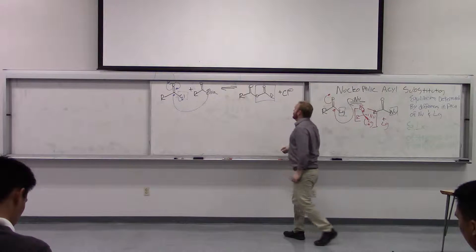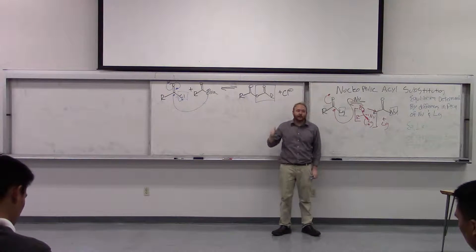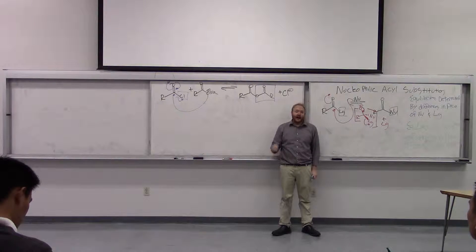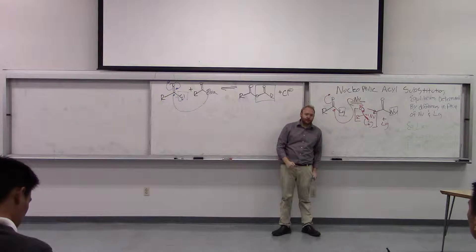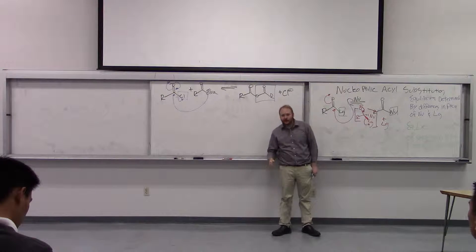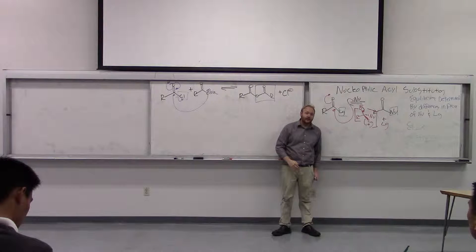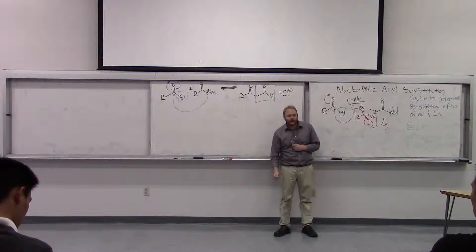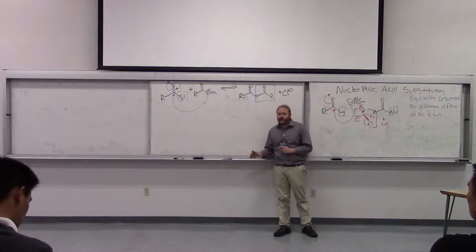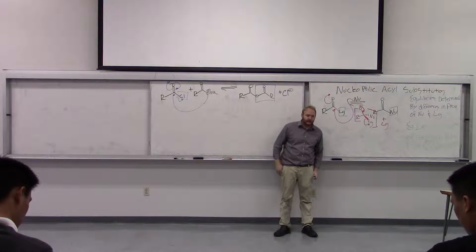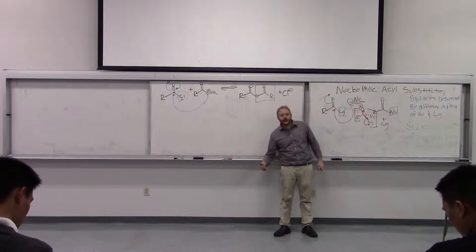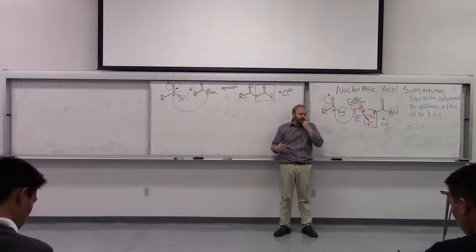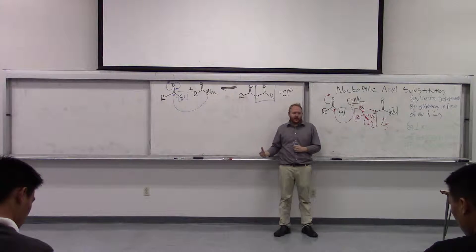The best way to predict the equilibrium is to look at the group that's on the acyl group in the starting material and look at the group that's on the acyl group in the product, and realize that the equilibrium is going to favor the side where the stronger base has formed the bond to the acyl group and the weaker base has left and is swimming around.